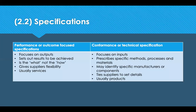Assuming you've made the decision to outsource and involve a third party, you're going to need to write a specification, which is often called the heart of the contract. When things don't go according to plan, the first document we rely on is the specification to see what we asked for. There are two types of specifications: performance specifications, also known as outcome-based specifications, and conformance specifications, also known as technical specifications.